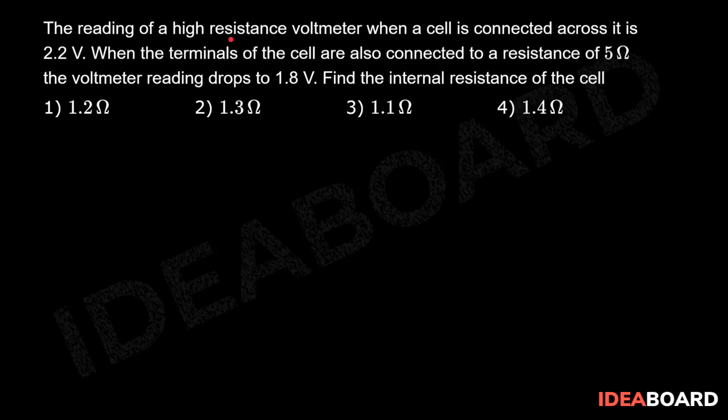The reading of a high resistance voltmeter when a cell is connected across it is 2.2 volts. When the terminals of the cell are also connected to a resistance of 5 ohms, the voltmeter reading drops to 1.8 volts. Find the internal resistance of the cell.